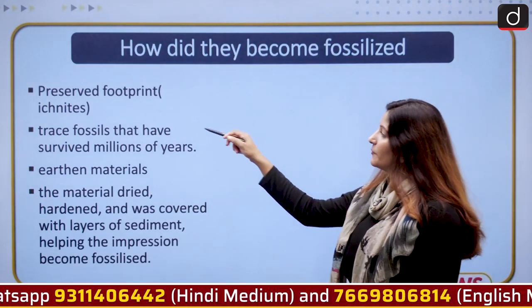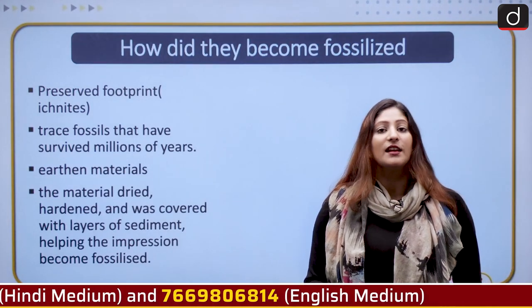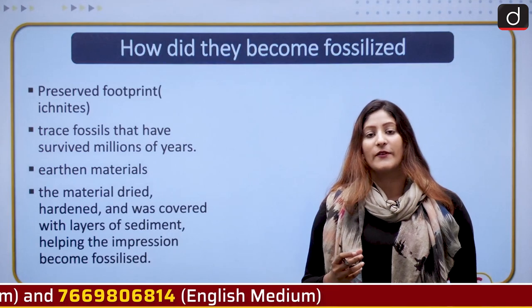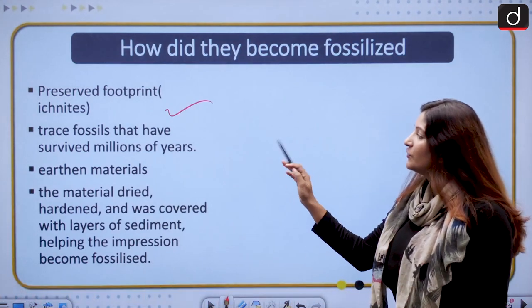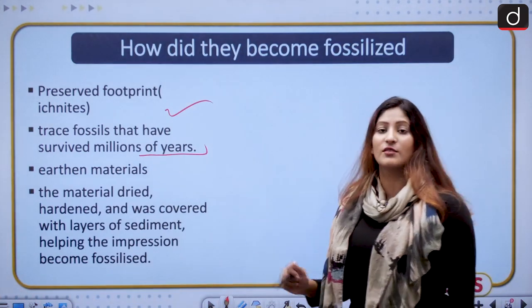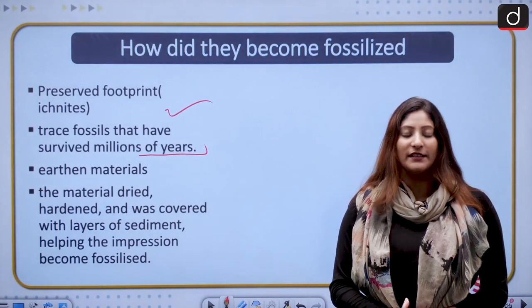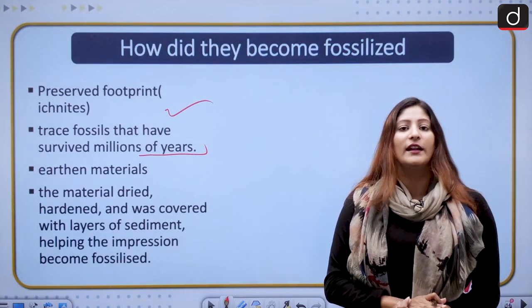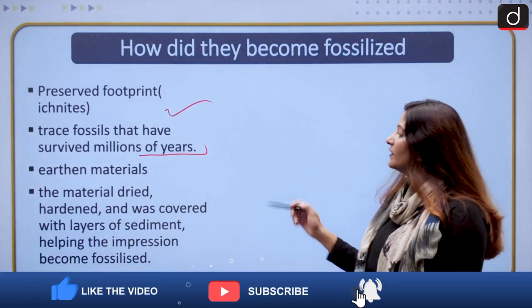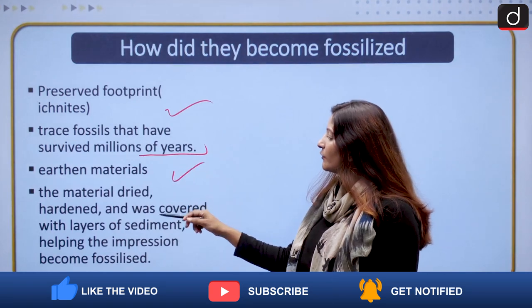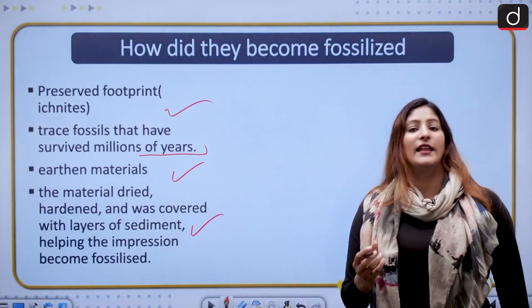If we talk about preserved footprints, they are fossilized, meaning they can take us back to that time when the footprints were made. These preserved footprints are known as ichnites—trace fossils that have survived millions of years. They are made up of earthen material which had a quality that it was soft enough for the footprint to get impressed upon, and then hard enough to retain that footprint.